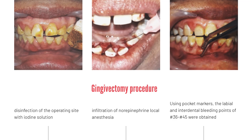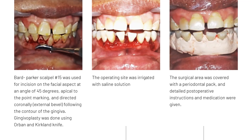The surgery began with disinfection of the operating site and infiltration of non-epinephrine local anesthesia. Pocket markers were used to determine the bleeding points from teeth 36 to 45. A number 15 scalpel was used for incision on the facial aspect at a 45-degree angle apical to the bleeding point marking, directed coronally following the contour of the gingiva. The gingival tissue was excised using Orban and Kirkland knives. The operating site was irrigated with saline solution, covered with a periodontal pack, and detailed post-operative instructions and medications were given.